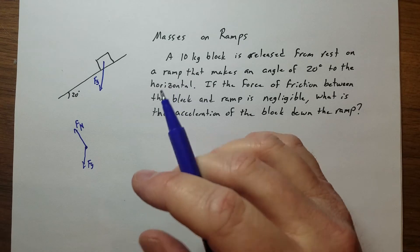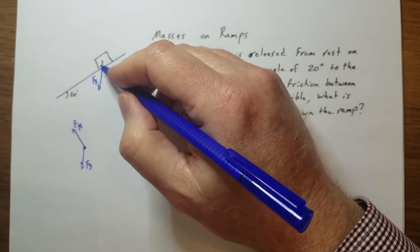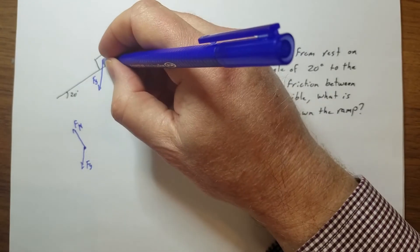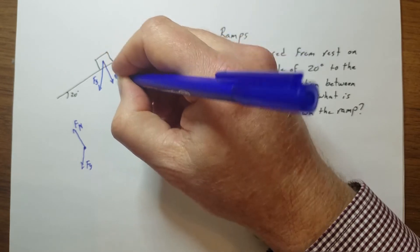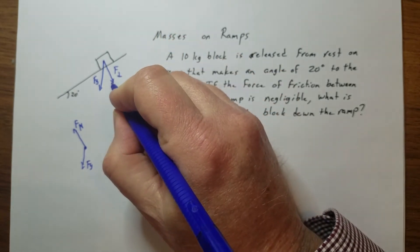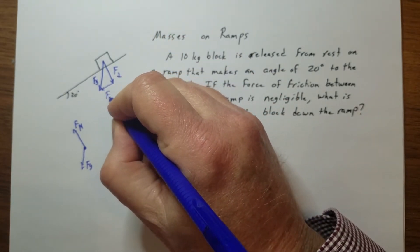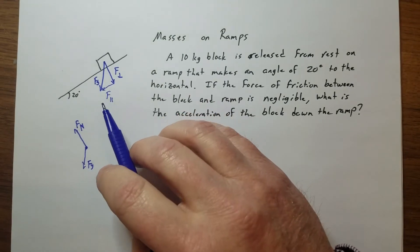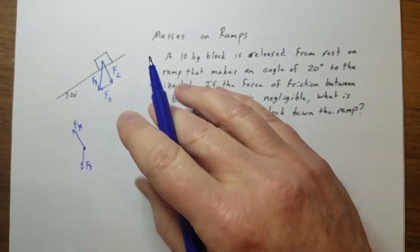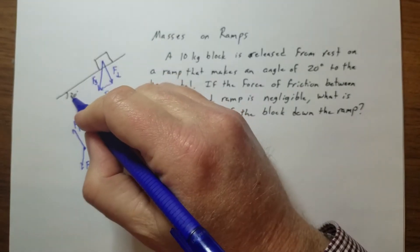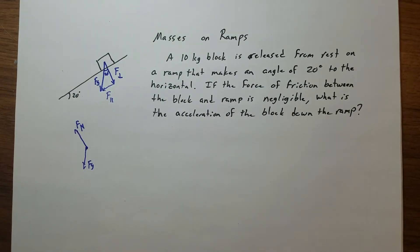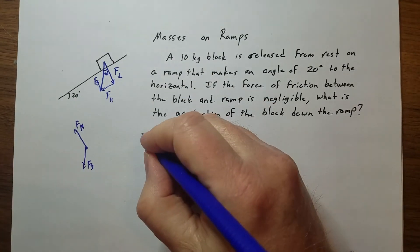The free body diagram alone doesn't completely help us. We need to figure out how much of the gravitational force is actually moving the block down the ramp and how much is pushing into the surface. So we're going to draw a component triangle with a force perpendicular and a force parallel. Because of similar triangles, this angle and that angle are the same.